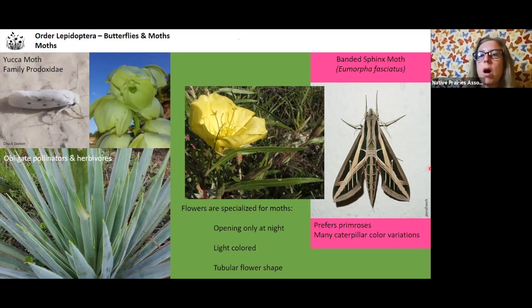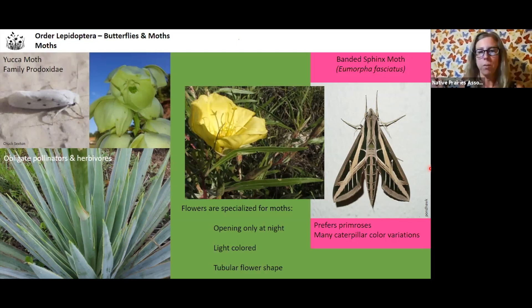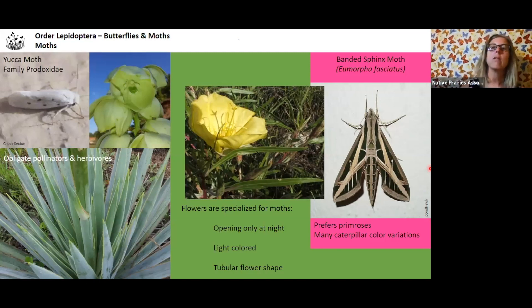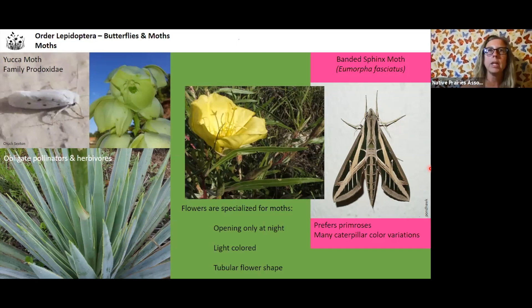Another moth species is the banded sphinx moth — you see it around here and it's pretty big. Sometimes it might look like a hummingbird going by. They prefer Oenothera or primrose species, which have big wide-open flowers with large petals, opening at night and closing during the day. The moths pollinate at night, and the light color attracts them. Moths also use their feathery antennae to identify mates and help with nighttime flying.